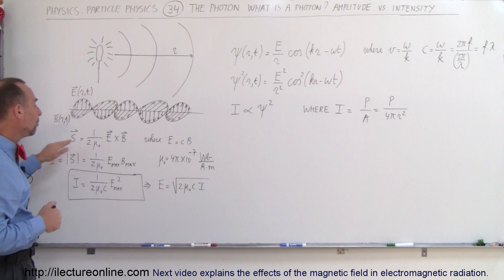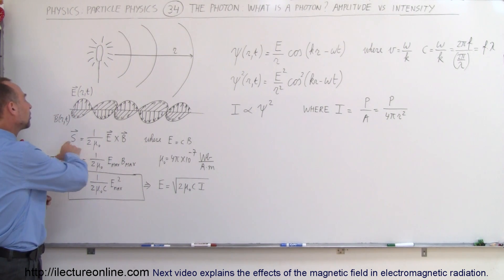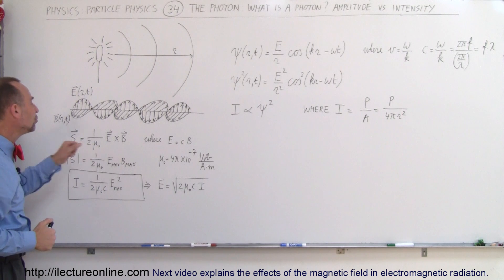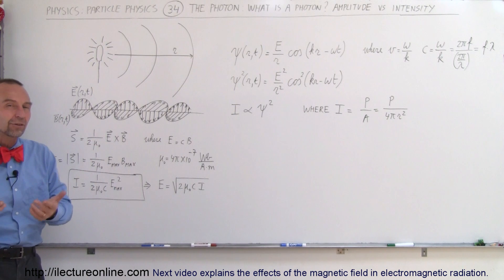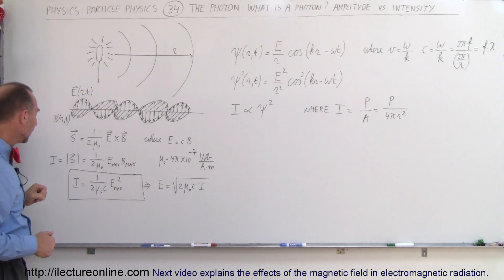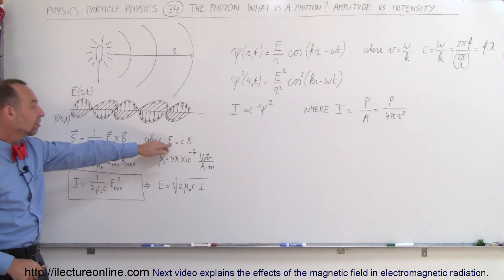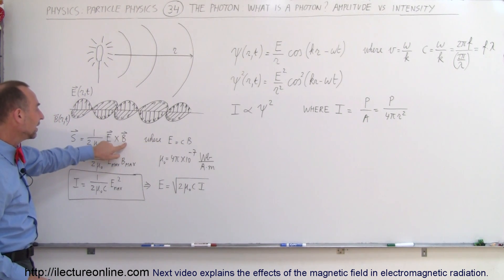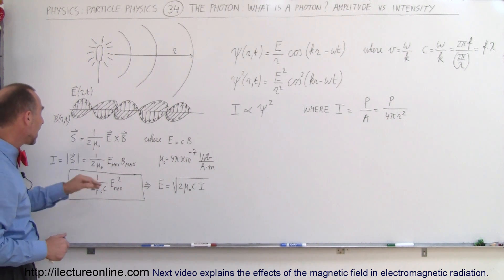The Poynting vector of radiation is the cross product of the electric field oscillations and magnetic field oscillations times a constant, 1 over 2·μ₀. The factor of 2 is there because we're taking the maximum values of the oscillations. If we take the RMS values we can remove the 2. Since the relationship between E and B field oscillations is the speed of light, we can replace B with E divided by c, giving us E_max squared.